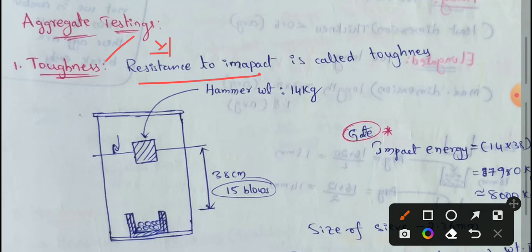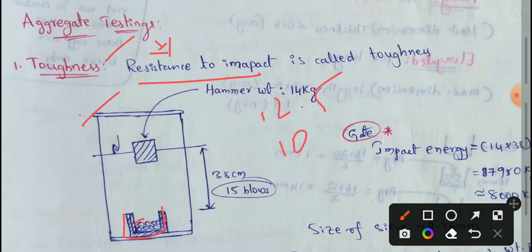We need to conduct the Aggregate Impact Test. First of all, we need to fill the aggregate in this box. This aggregate is 12.5 mm sieve and 10 mm sieve rated.